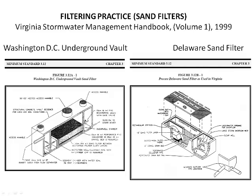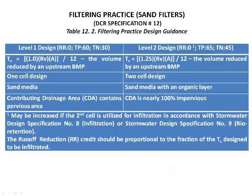Perimeter sand filters are usually designed as online practices, but can be modified to divert larger flood events to bypass treatment. In addition, there are a number of proprietary filters that use various filter media and geometric configurations to achieve filtration within a packaged structure. Designers must verify that the particular product has been reviewed and accepted by the Virginia BMP Clearinghouse for use in Virginia. Hybrid systems include sand filters on the bottom of a dry extended detention pond. Table 12.2 gives the filtering practice design guidance.